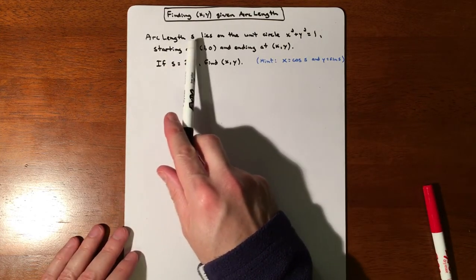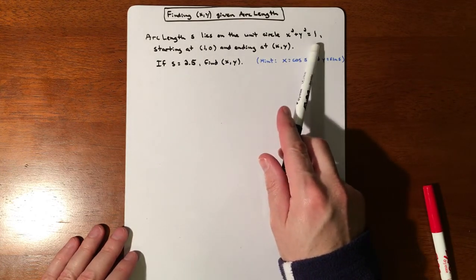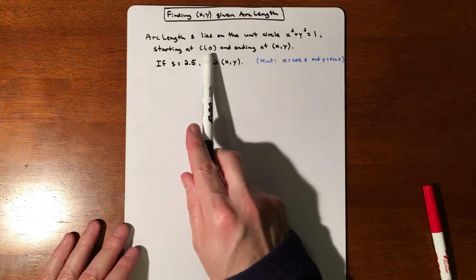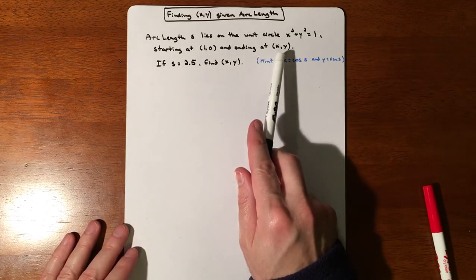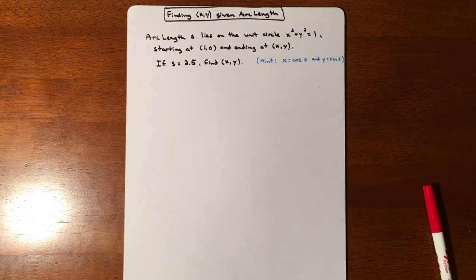So if we're given an arc length S, lies on this unit circle, x squared plus y squared equals 1, and our arc length is going to start at the coordinate 1, 0, and end at some coordinate. What is that coordinate? So they give us that the arc length is 2.5.